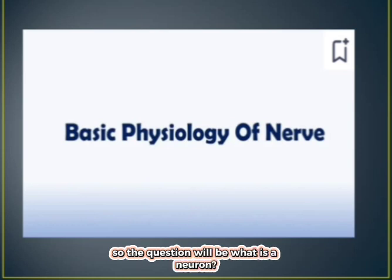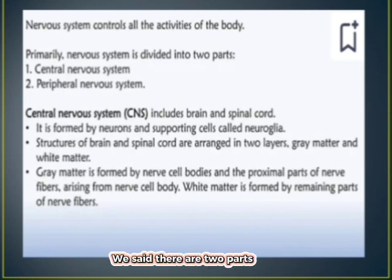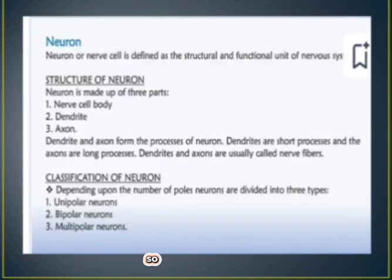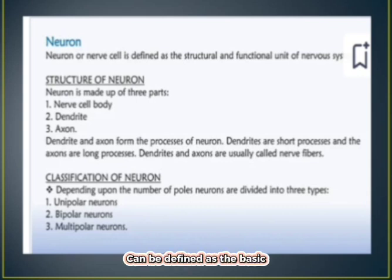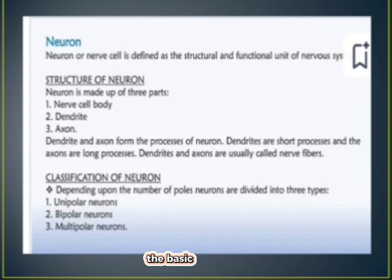The question would be: what is a neuron? When we introduced the nervous system, we said it has two parts — the central nervous system and the peripheral nervous system. A neuron is defined as the basic structural and functional unit of the nervous system.